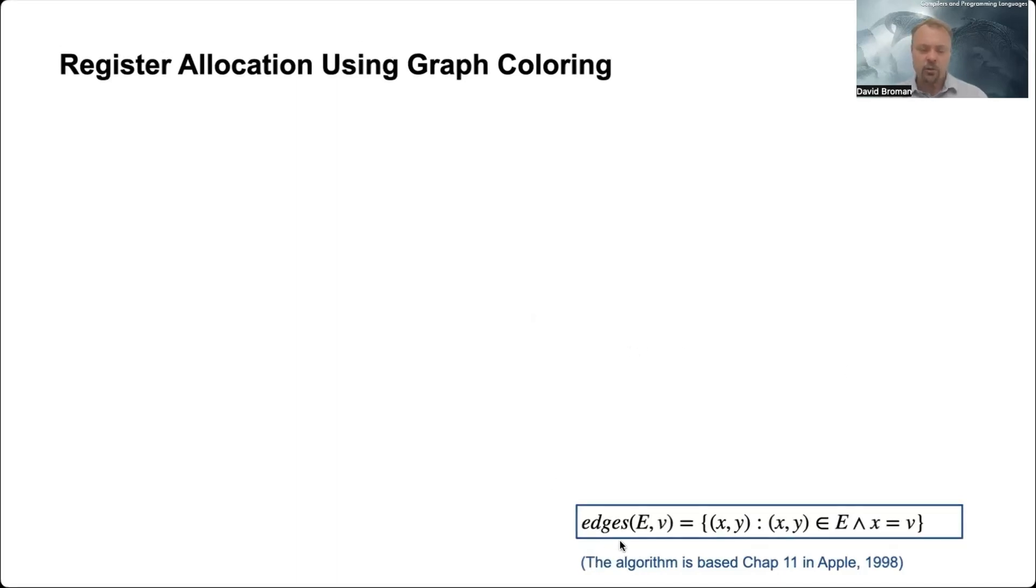And we'll use also a helper function here called edges, where we basically get out the edges from certain vertices v. The algorithm is called graph coloring by simplification.